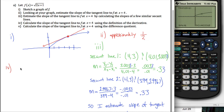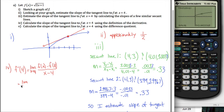We want to find the slope of the tangent line to f at x equals 4 — a shorthand way of saying that is f prime of 4. Using the definition of the derivative, this equals the limit as x approaches 4 of f of x minus f of 4 over x minus 4. So f of x is the square root of 2x plus 1, and f of 4 is 3 — since 2 times 4 is 8, plus 1 is 9, and the square root of 9 is 3. That goes over x minus 4.